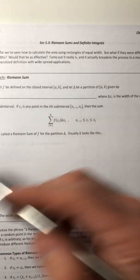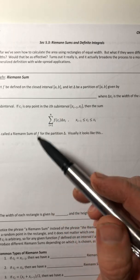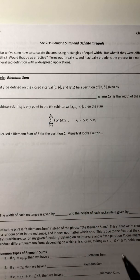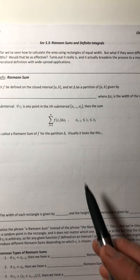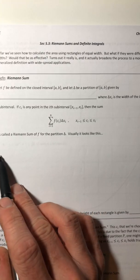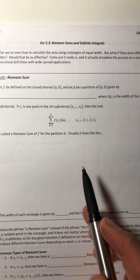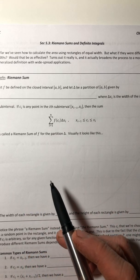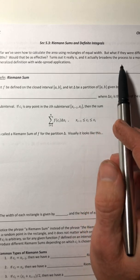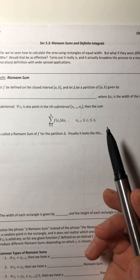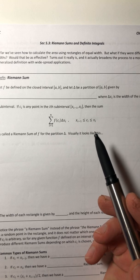All right, so in the last section we looked at the area under a curve and we found it by getting the area of rectangles and then adding them all up. But the thing about those is that the base or the width of each rectangle was exactly the same. Well, what if they weren't the same? What if they were different widths? Would that do the trick? Would that be as effective?